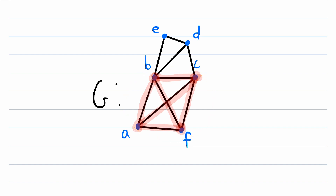This clique cannot be extended by adding in any more vertices, and we can see that clearly by checking the other vertices in this graph. We cannot extend the clique by adding D because D is not adjacent to F and it's not adjacent to A. So if we added in D we would no longer have a clique. Similarly, we can't add in E because E is not adjacent to C, not adjacent to F, and not adjacent to A. If we were to add in E, we would no longer have a clique because all the vertices wouldn't be adjacent.